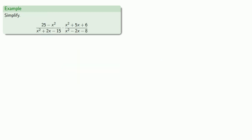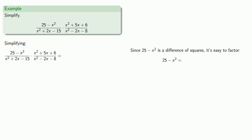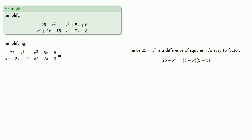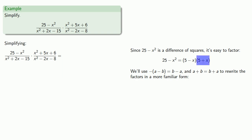Now let's try a more complex problem. Since 25 minus x squared is a difference of squares, that's easy to factor. It factors in a slightly unfamiliar form, but using commutativity — since a plus b equals b plus a — we can rewrite 5 plus x as x plus 5.